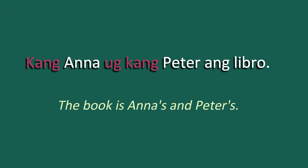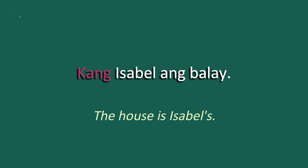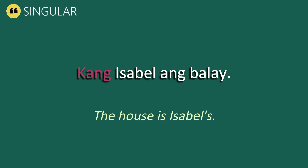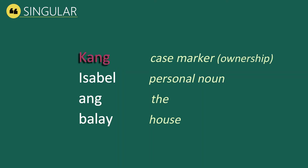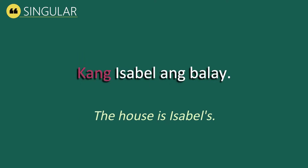Our second example for personal names in singular form is: Kang Isabel ang balay, which means 'The house is Isabel's.' Kang is our case marker of ownership, Isabel is the person's name, ang means 'the,' and balay is the word for house. Kang Isabel ang balay — the house is Isabel's.